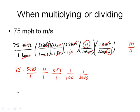And if I work all of that arithmetic out, 75 times 5,280 times 12 times 2.54 divided by 100 divided by 3,600. And I get 33.528 meters per second. 75 is two significant digits, so this rounds off to 34 meters per second. And so 75 miles per hour is roughly 34 meters per second.